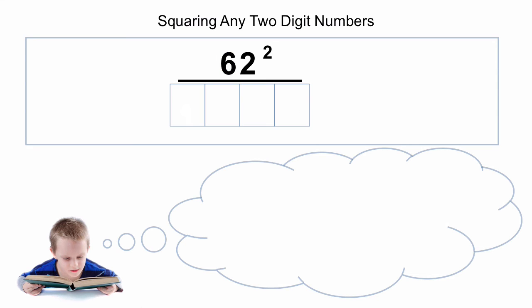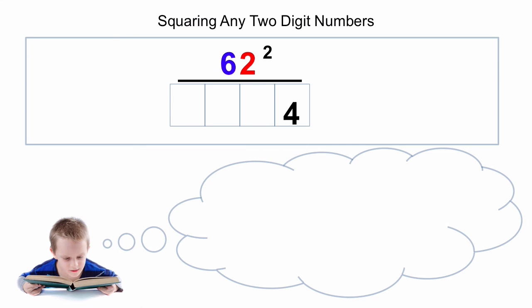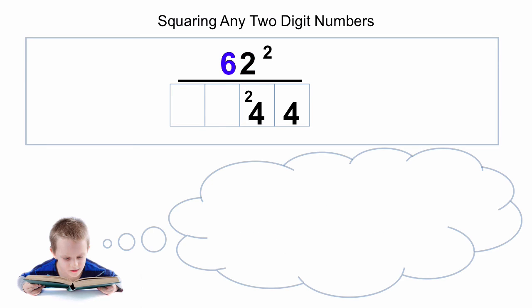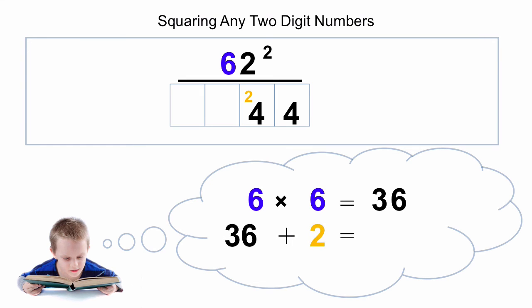Let's look at another example: 62 squared. First, we look at the units: 2 squared is 4, so we put down the 4. The second step, we multiply the tens by the units: 6 times 2 is 12. We double this: 12 times 2 is 24. So we put down the 4 and carry the 2. The last step is to square the tens digit: 6 times 6 is 36. We have a carry of 2, so 36 plus 2 is 38. We write down the 8 and the 3, and there's our answer: 3,844.